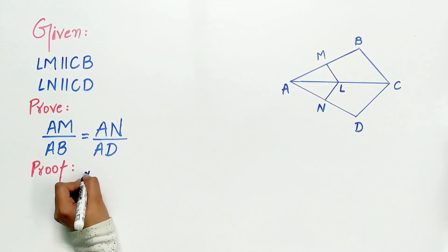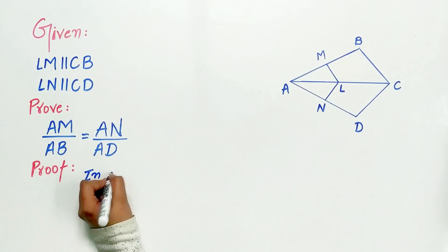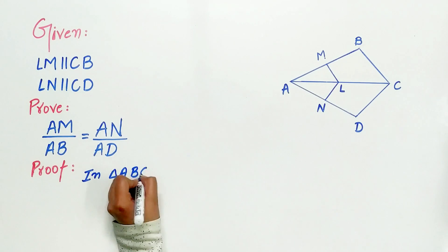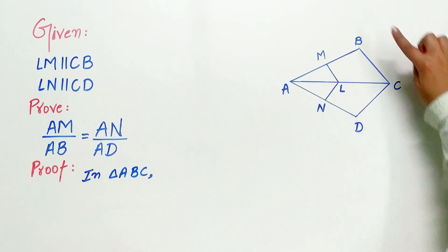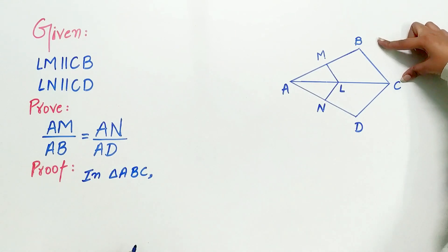So we will first look at triangle ABC. In triangle ABC, LM is parallel to BC. BC is the side of a triangle.